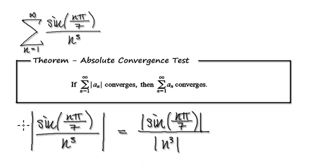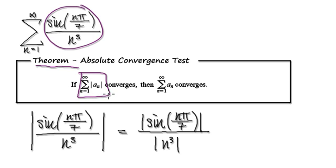OK, so to do this, we are going to make use of this theorem. We've seen this theorem in the past. Rather than looking at this, we would look at the absolute version of the very same thing. And if the absolute version of the very same thing converges, then the original series will also converge.